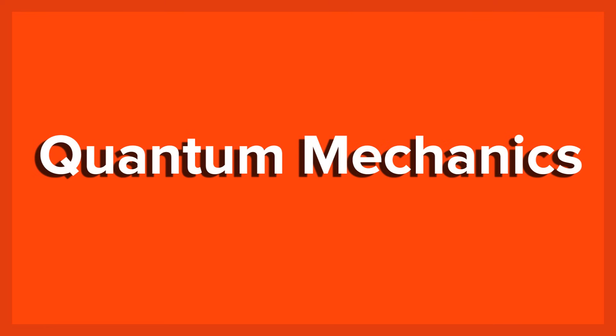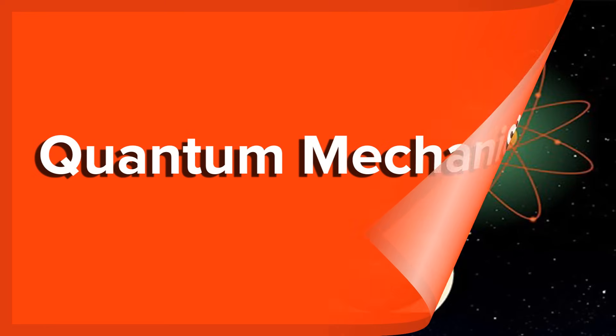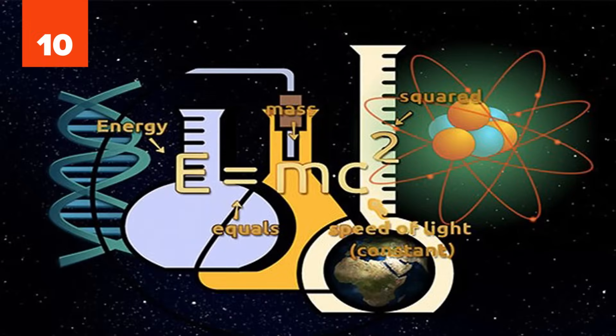Number 10. Quantum Mechanics. There are some pretty weird things that happen at a quantum level. In fact, the regular laws of physics break down and get a little blurry.